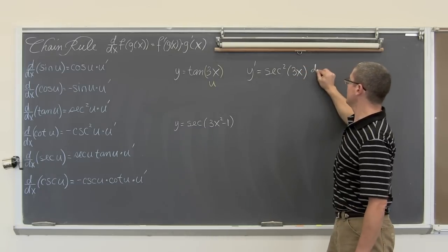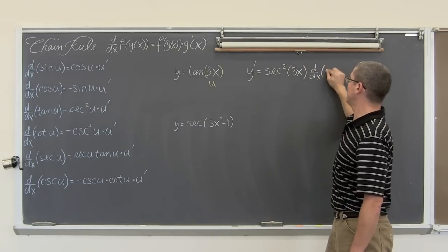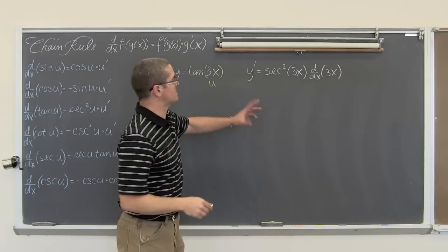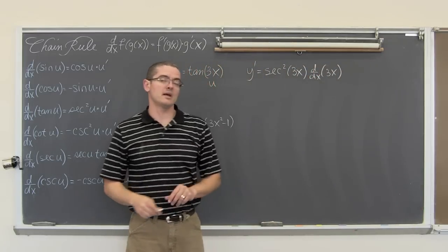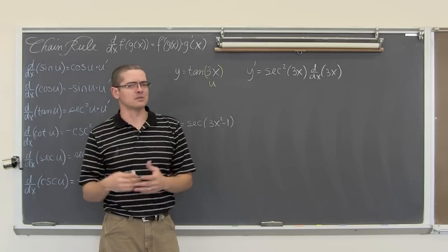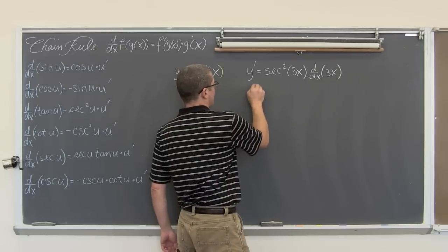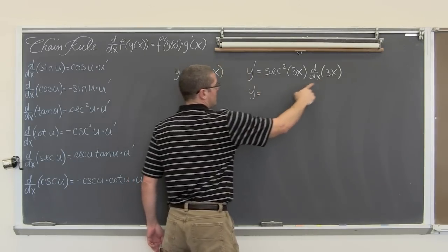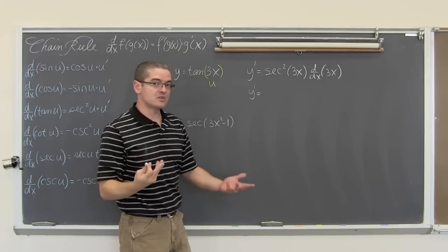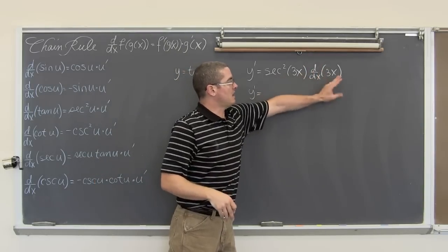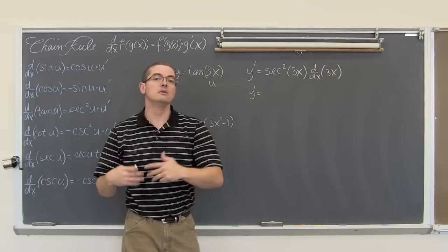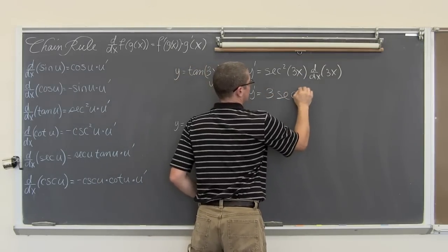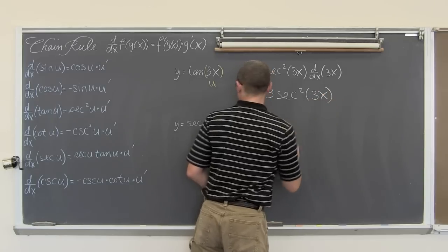So we are going to have to find the derivative with respect to x of 3x. A lot of you will just say the derivative of 3x is equal to 3, and you would be absolutely correct. So this becomes y prime equal to 3 secant squared of 3x.